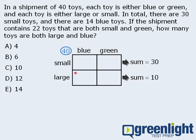Okay, moving along, we're also told that there are 14 blue toys altogether. Well, notice that these two boxes are meant to hold the blue toys. This box is for small blue toys, and this box is for large blue toys. So the sum of these two boxes must be 14, since there are 14 blue toys altogether.